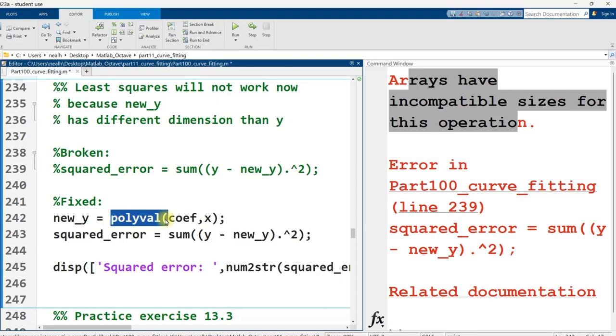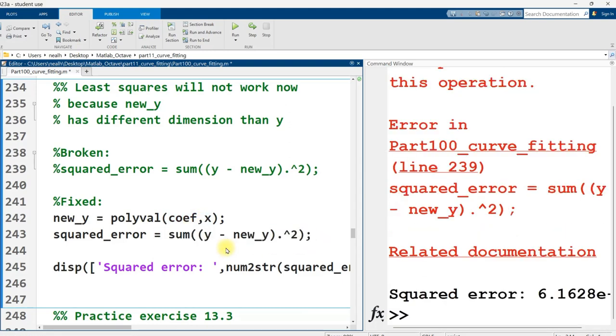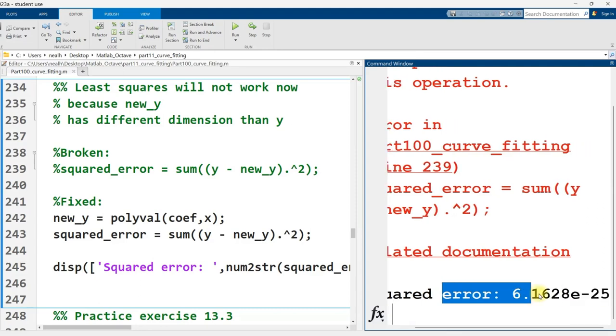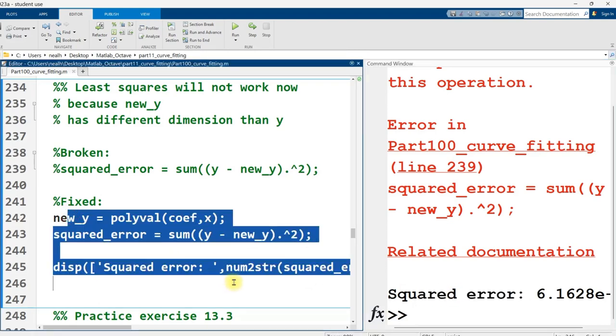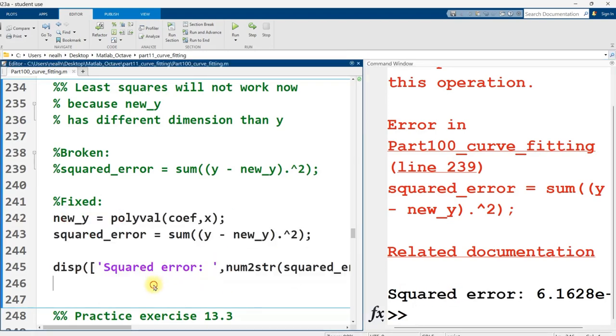The way to fix this is you simply just regenerate y values based on comparable x values from your original data. So I just run polyval again with the coefficients from polyfit, the original x data, and then I can do my squared error right here, which is what I go ahead and do. And there it is at the bottom right there. I mean, it's ridiculously close to zero, so it's probably not meaningful, but that is how you would recalculate it regardless of what sort of fit you're doing to your data.